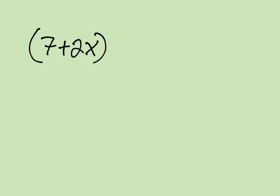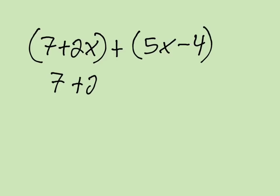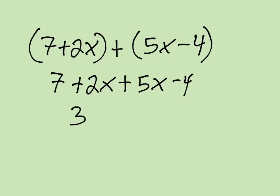Let's say we have 7 plus 2x plus 5x minus 4. That just becomes 7 plus 2x plus 5x minus 4. You don't need to rewrite it every single time — I'm just doing this for demonstration purposes. Then we have our combining like terms. Starting with 7 and then negative 4 gives us 3. 2x and 5x gives us 7x.